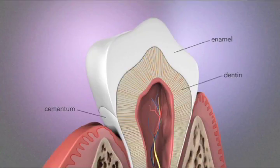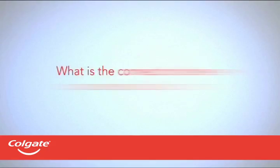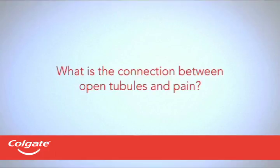Once the root is exposed, the protective layer of cementum can easily be removed, exposing the dentin. But what is the connection between these open dentin tubules and pain?